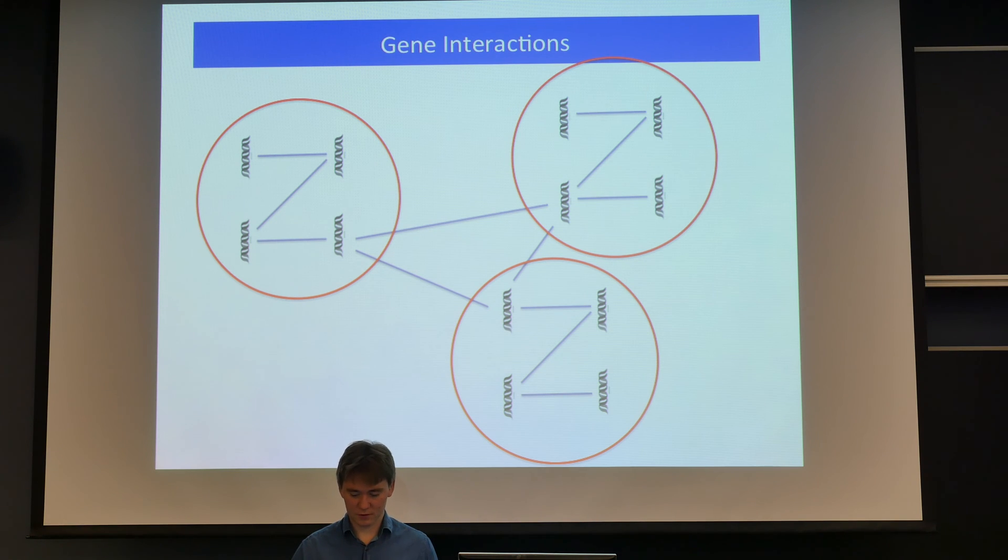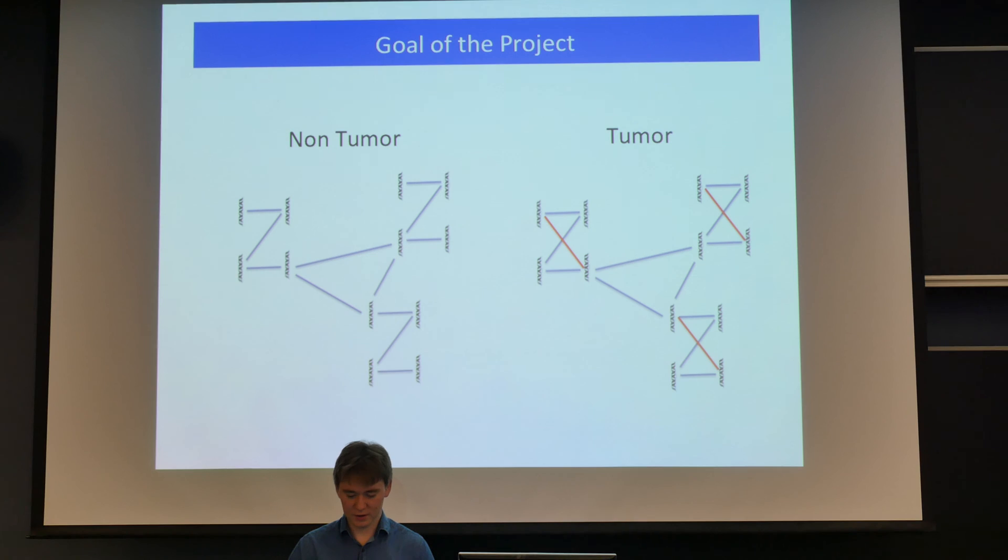So the goal of our project was - our hypothesis was that cancer caused some changes in these motifs. So tumor tissues have changes so that motifs are different. The goal of our project was to compare these two networks in terms of changes in network motifs.